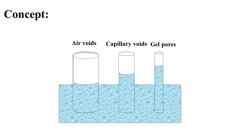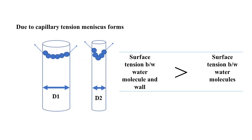Due to capillary tension, a meniscus forms. The surface tension between the water molecules and the wall is much greater than the surface tension between the water molecules themselves. The sharper the angle created, the higher the capillary rise — meaning smaller pores are more likely to be filled with water. The higher tension in the molecule makes it harder for the water to freeze.